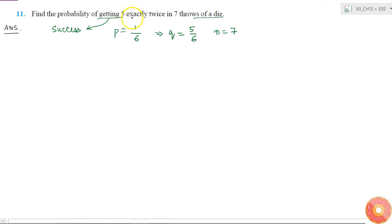So now what should I find? What is the probability of getting exactly 2 fives? That is the number of 5's is 2.